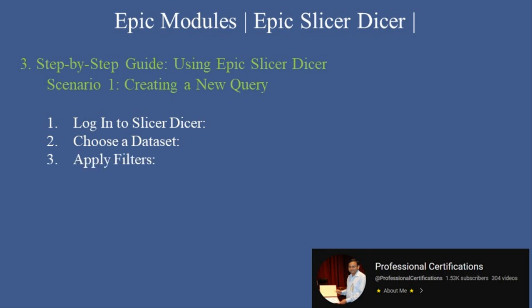Step 3, apply filters — refine your query by adding filters such as age, gender, diagnosis codes, or care location. Step 4, view results — review the generated data visualizations, including bar charts, line graphs, and tables. Step 5, save your query — save the query for future use or share it with your team for collaboration.